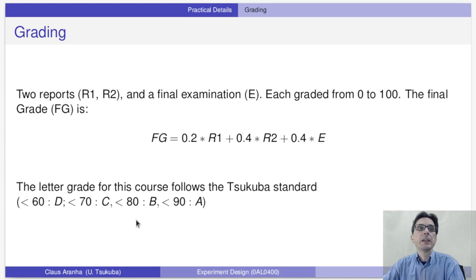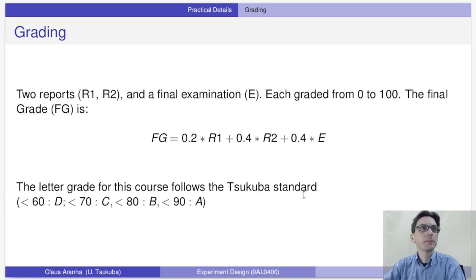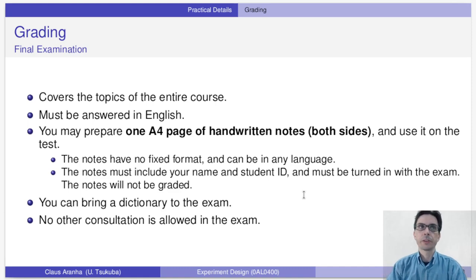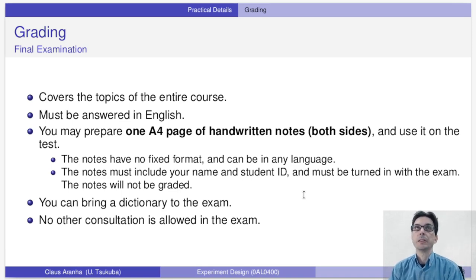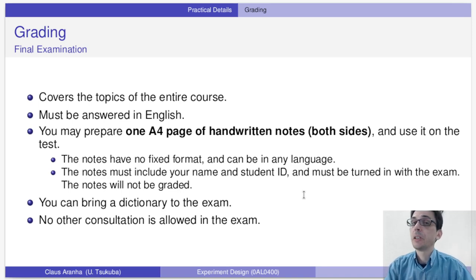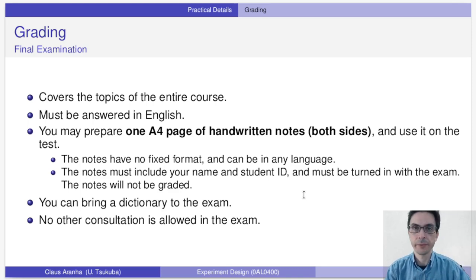The grade follows the school standard — a passing grade is 60, and to get an A you need more than 90. The final examination covers the topic of the entire course. I talked to you before about the weekly attendance survey — the questions in the final examination will be similar to the questions in the attendance survey. That's another reason to take the attendance survey every week.